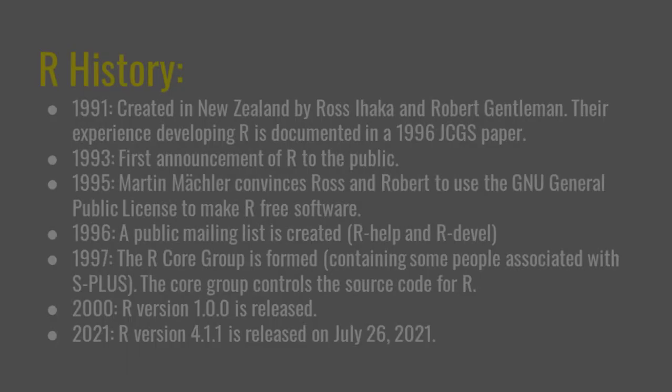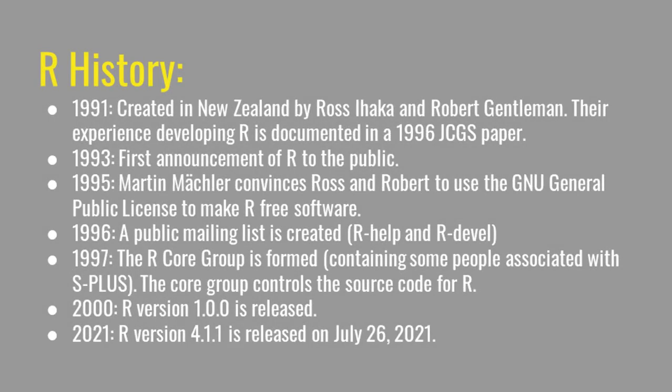Now let's go back to R. R is a relatively recent development. In 1991 it was created in New Zealand by two gentlemen named Ross Ihaka and Robert Gentleman. They discussed their experience developing R in a paper published in 1996 in the Journal of Computational and Graphical Statistics. In 1993 the first announcement of R was made to the public. In 1995, Martin Mächler convinced Ross and Robert to license R under the GNU General Public License, which made R what we call free software.